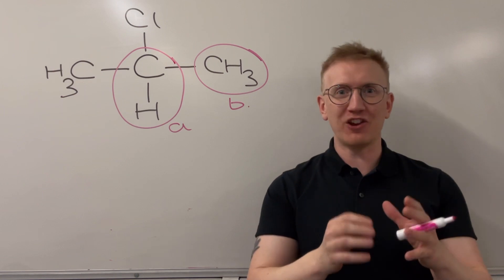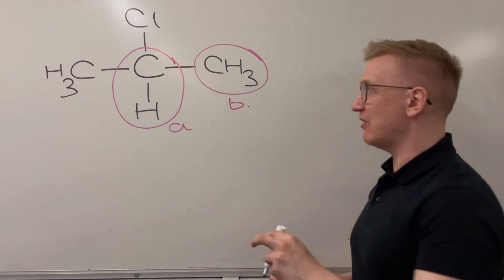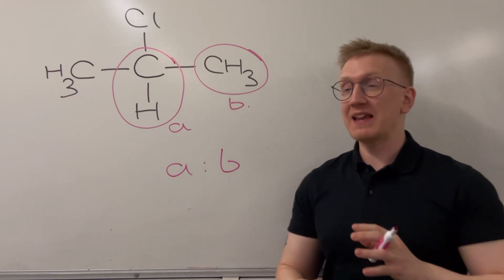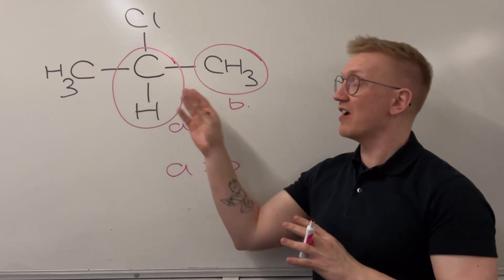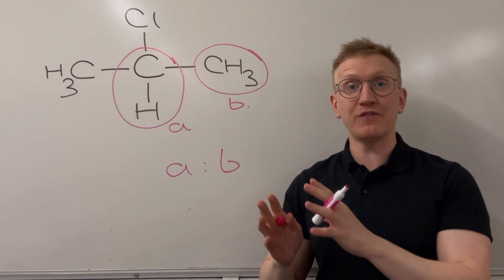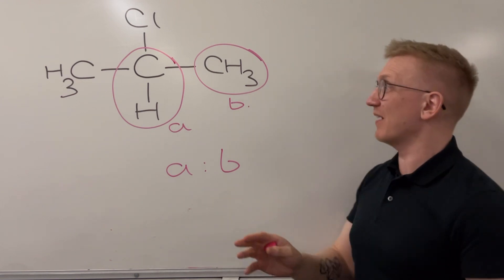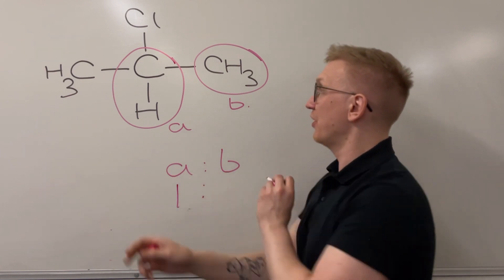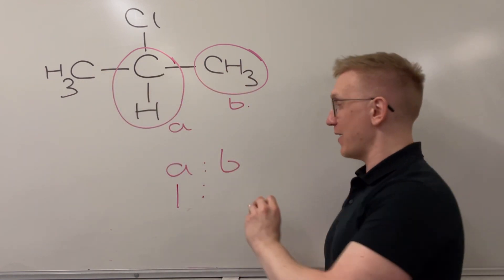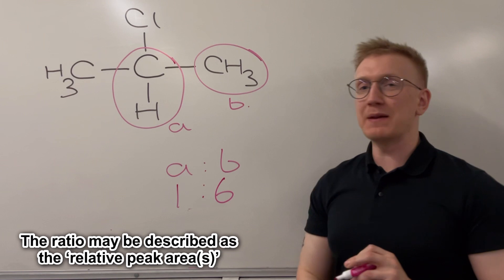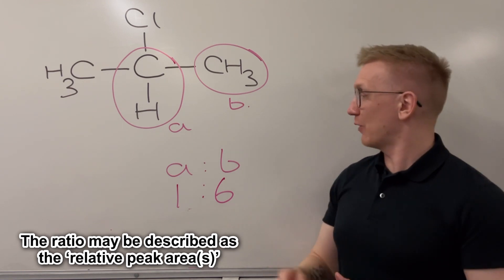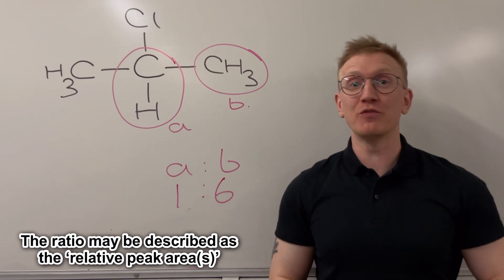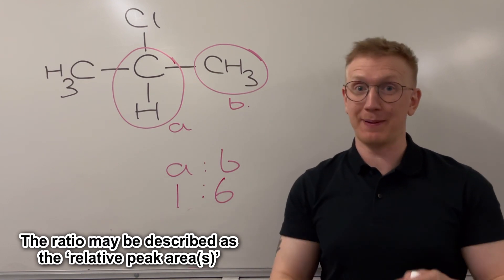What about the ratio between those peaks? Well, the ratio between my two peaks, A and B, is going to be the same as the number of hydrogens we have within these individual environments. So for example, since I've got one hydrogen here in environment A, that's going to be a 1 to 6 ratio between peaks A and B. So I've got that nice 1 to 6 ratio between two peaks, I'm now ready to move on to predicting the splitting pattern.